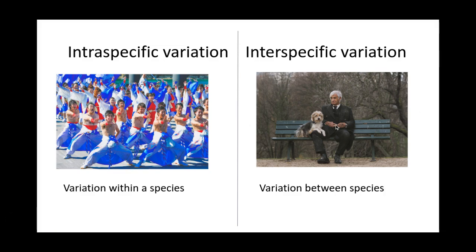Here we have two different species - a human and a dog - and we've got variation between species. So intraspecific variation versus interspecific variation.